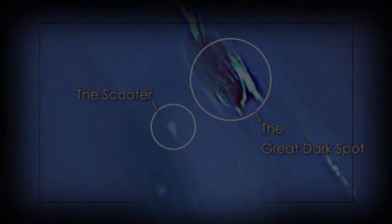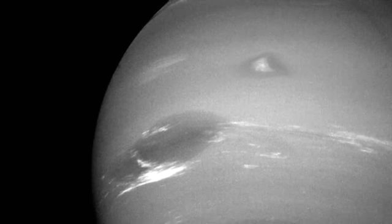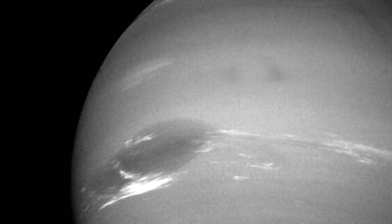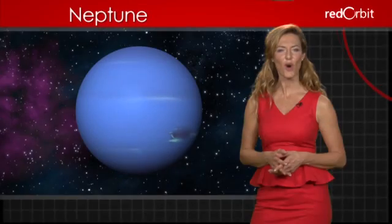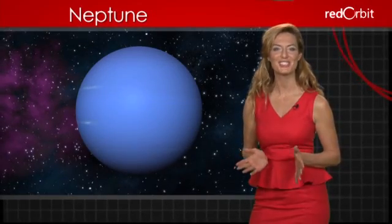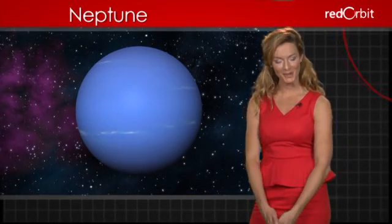In 1994, the Hubble telescope discovered that the dark spot found in 1989 had disappeared and another dark spot had developed. Distant and cold, Neptune continues to reveal secrets and mysteries yet to be unraveled.